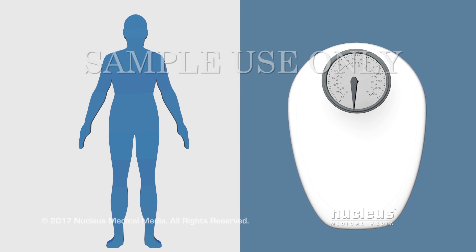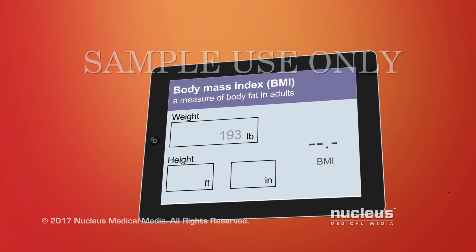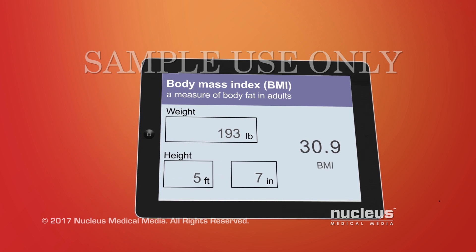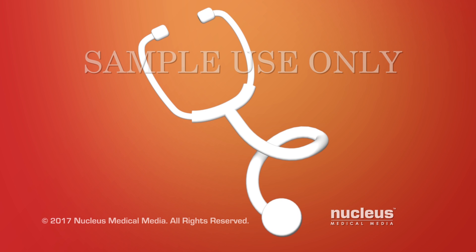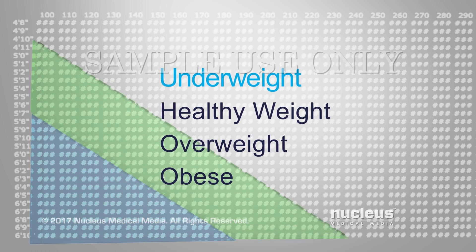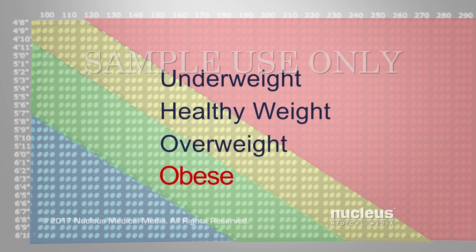BMI estimates your body fat by comparing your height to your weight. You can enter your measurements into a BMI calculator, or your health care provider can figure out your BMI for you. Once you know your BMI, you or your health care provider can find it on a chart to see if you are underweight, a healthy weight, overweight, or obese.